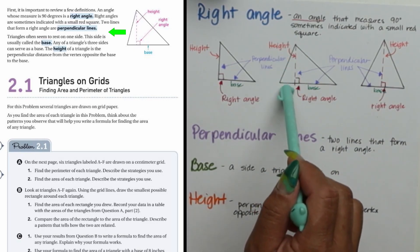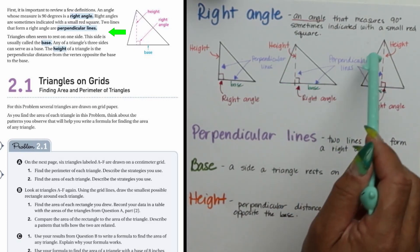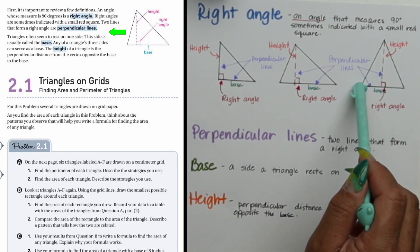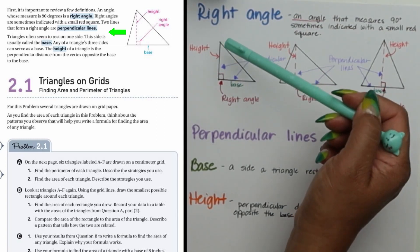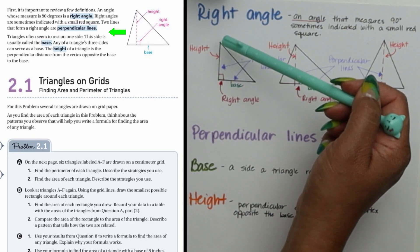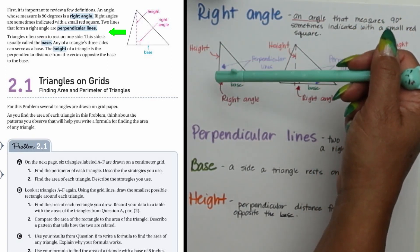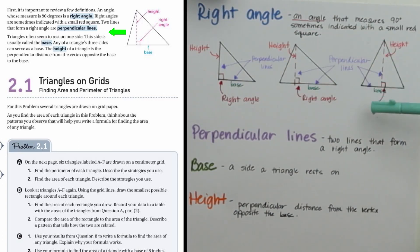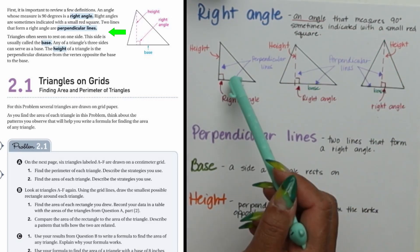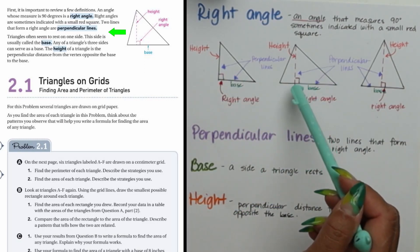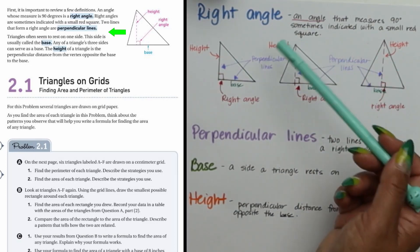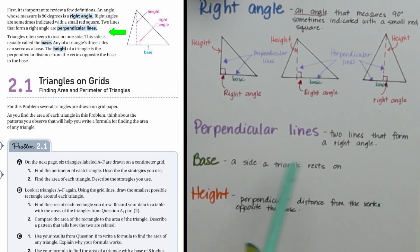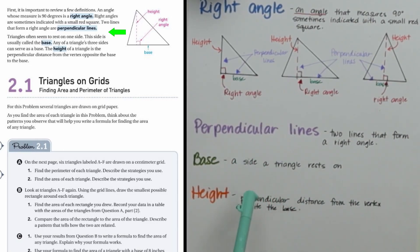We have perpendicular lines here and here, shown by the dashed red lines and the base. To find perpendicular lines, find the highest vertex opposite the base and draw a straight line that's 90 degrees from the base. The base rests on the floor, and everything above it — the vertices and sides — floats above. The height is the perpendicular distance from the vertex opposite the base.